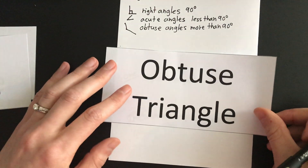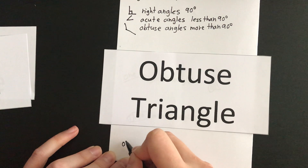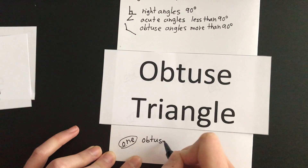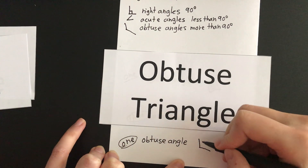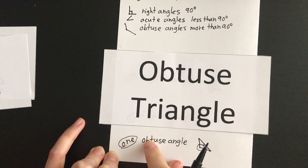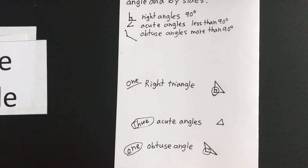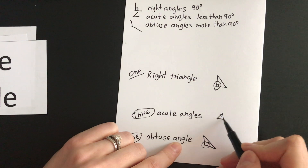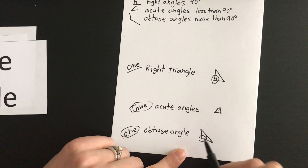And then we have obtuse triangles. This has to do with obtuse angles that are greater than 90 degrees. But just like the right triangle, it just needs one obtuse angle, and we can call the whole triangle obtuse. So if one angle is bigger than 90 degrees, the whole triangle gets called obtuse. Another way to think about it: check your triangles and decide what is the biggest angle. If the biggest angle is right, it's a right triangle. If the biggest angle is acute — they're all little acute angles — then the whole triangle is acute. And if the biggest angle is obtuse, then the whole triangle is called obtuse.